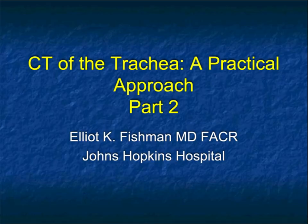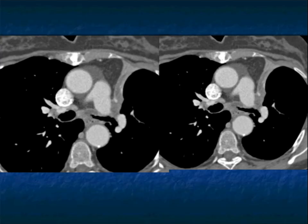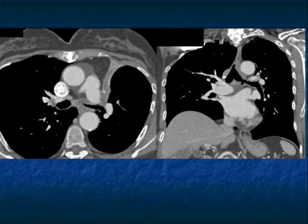Hi, this is Elliot Fishman and welcome to our latest talk on CT of the trachea. This is part two. I showed you this slide as I finished up part one — look at the trachea, look at the left main stem bronchus. The left main stem bronchus is diffusely thickened and narrowed, and then there's collapse in the left upper lobe. Here is another look at it. So now you have an infiltrating process.